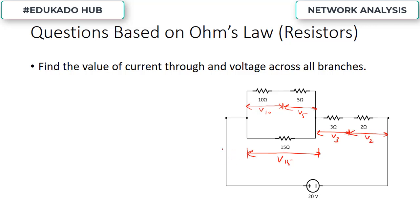Let us assume that the current through the entire circuit is I. At a particular node, the current will be divided into two parts — let us assume I1 and I2. With respect to that, we will try to find out the entire voltage and current through each element. First of all, in such problems we have to find out the equivalent resistance of this particular circuit.